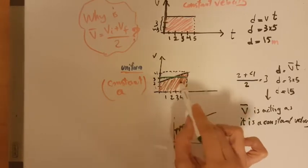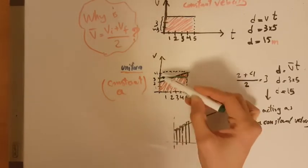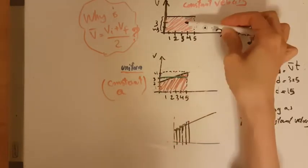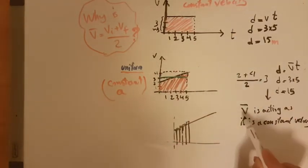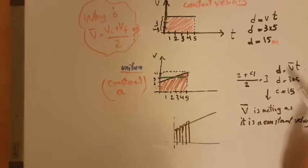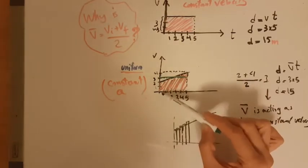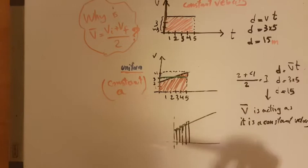So if I find the area underneath this green, which is similar to this, so this V average that I found in here, multiplied by the time, would give me the same displacement, which would be equal to this red area, actually. So V average is acting as if it is a constant velocity.